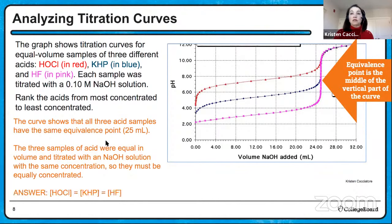Our first FRQ is about carboxylic acids. Use the Ka table to answer the questions. We have HCOOH, which is methanoic acid, and CH3COOH, which is ethanoic acid. Part one: which of the two acids is stronger? Justify in terms of Ka. The acid with the larger value of Ka is the stronger acid. If the prompt says 'justify your answer,' you need to explain — and here it tells you to do that in terms of Ka.